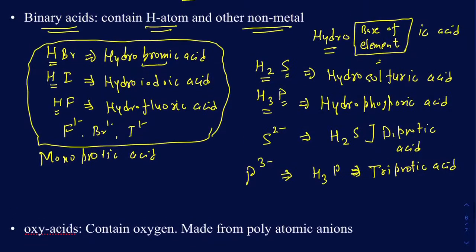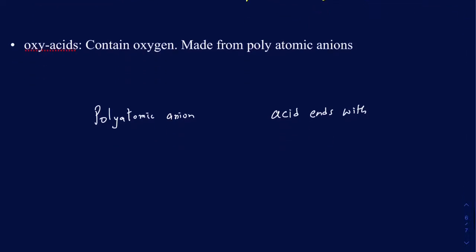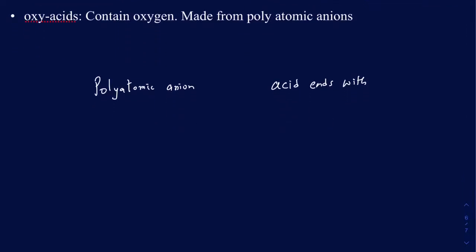So that's your binary acids — make sure you use 'hydro,' the base of the element, and then it ends with 'ic acid.' Now what about oxy acids? The oxy acids, as the name specifies, contain oxygen and they come from polyatomic anions. There is a rule for determining how you're going to name the oxy acids.